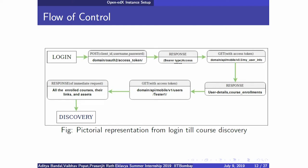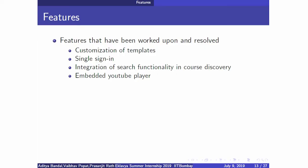Using this username, a GET request is made to api/mobile, which responds with a list of all courses the user has enrolled in. Using all these details, a discovery page is shown to the user. The discovery page is a list of courses which the user can enroll in.